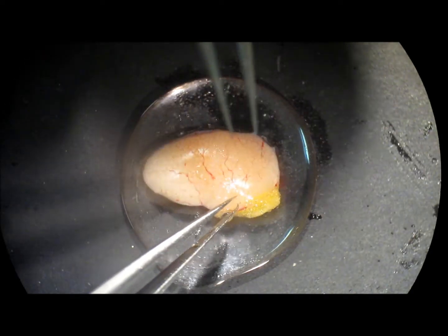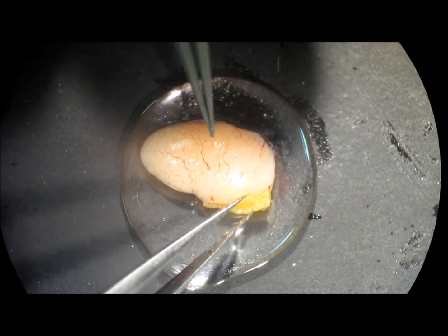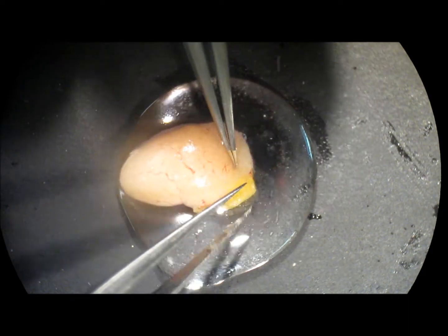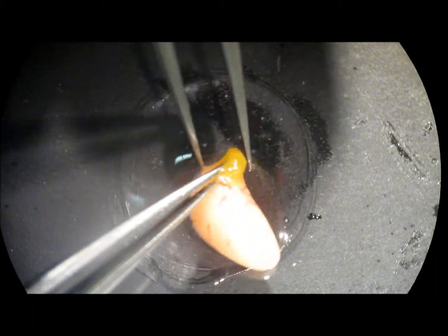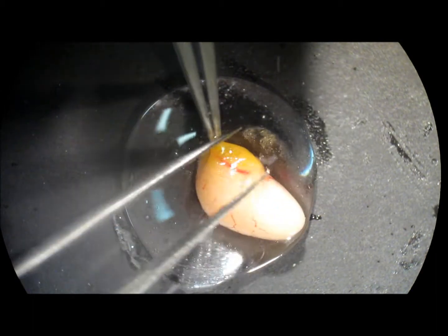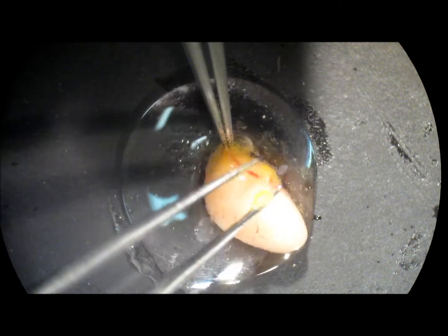Place the testis in one drop of 1XNPB. Clean out the testis by removing any remaining fat and connective tissue using number 5 forceps.